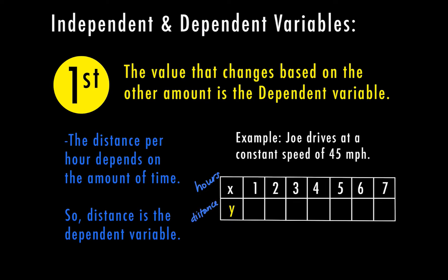His distance depends on his speed, and we're considering that he's driving at a constant speed. In the first hour at 45 miles per hour, he would have gone 45 miles. After hour 2, he's gone 90 miles. Hour 3: 135. Hour 4: 180. Hour 5: 225.